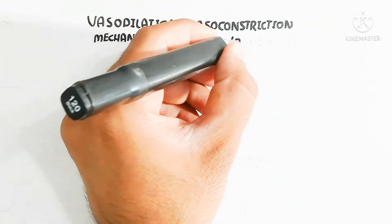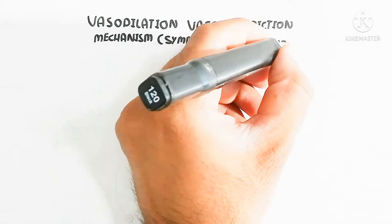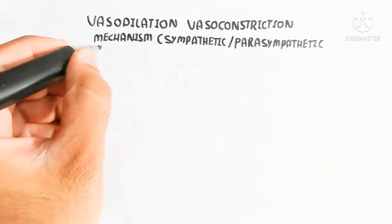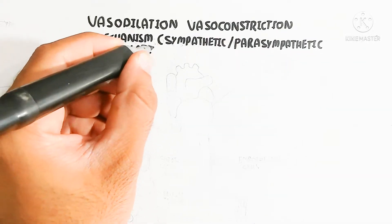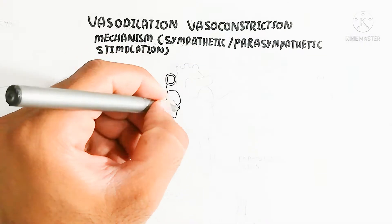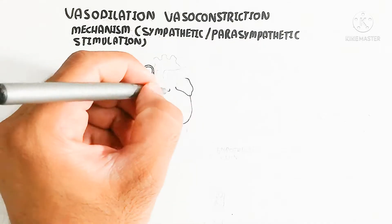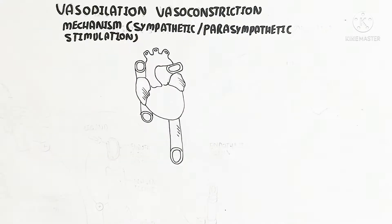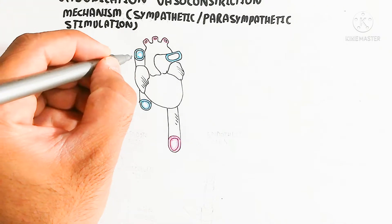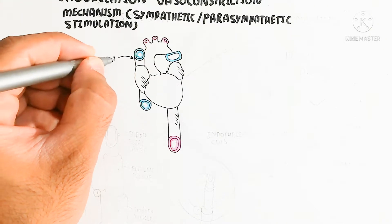First of all we need to understand the blood vessel and its function, because vasoconstriction and vasodilation occur in the blood vessel — in the blood circulatory system — for the regulation of blood pressure. For example, this is the heart containing the aortic arch, descending aorta, and superior and inferior vena cava.